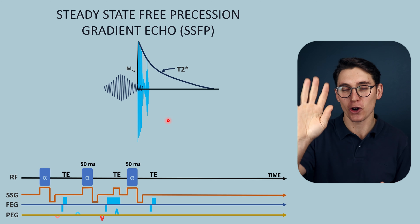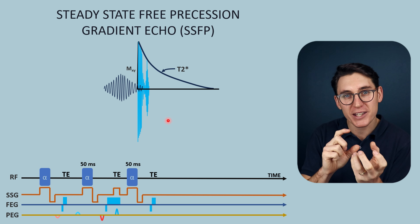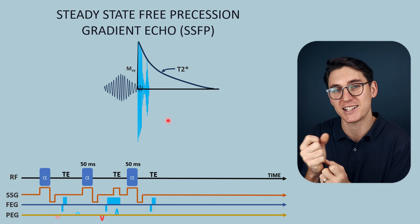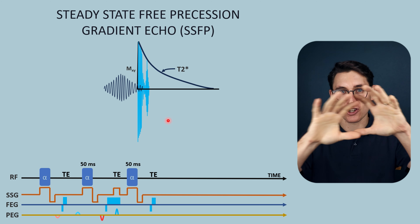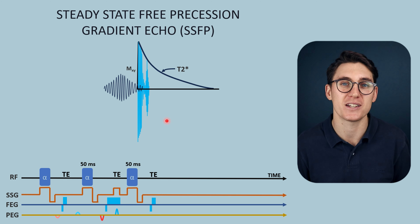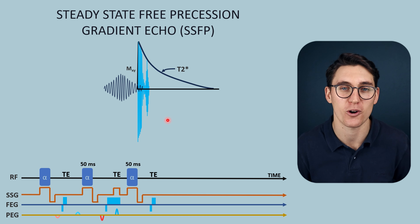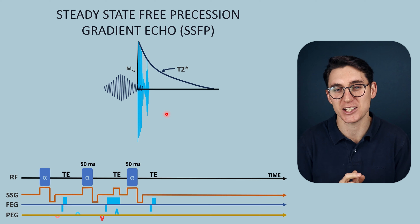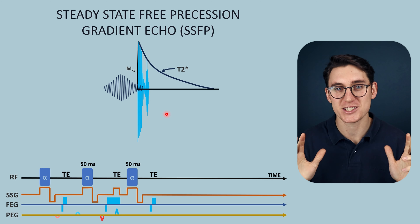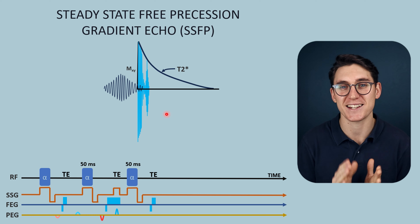The three pulse sequences covered here - coherent, incoherent, and steady state free precession - give different image weightings: coherent gives a mixture of T1 and T2; incoherent gives predominantly T1-weighted images; and SSFP gives predominantly T2-weighted images. These are broad overarching categories, and in practice there are many more complex sequences used by different MRI manufacturers. That brings us to the end of gradient echo pulse sequences. We'll now move on to the final category of inversion recovery pulse sequences, completing the three main pulse sequences in this MRI module: spin echo, gradient echo, and inversion recovery.